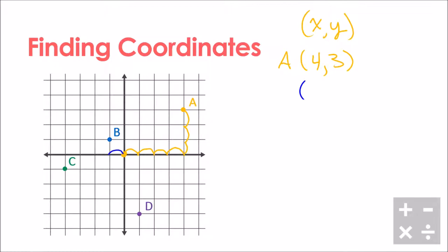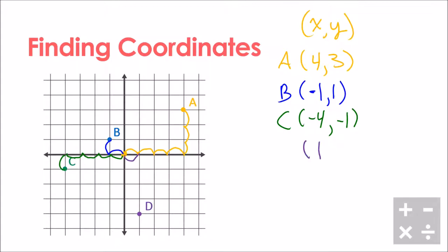For point B, I go one over to the left, so that's negative one, and it's one point up, so positive one. Point B is at negative one comma one. For point C, I go one, two, three, four points to the left — negative four — and one point down, which is negative one. So point C is at negative four comma negative one. For point D, I go one to the right — positive one — and down one, two, three, four — negative four. So point D is at one comma negative four. That is how we find the coordinates of a point on a graph.